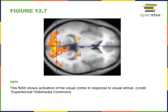An fMRI — functional magnetic resonance image — measures activity in the brain by detecting changes in blood flow, which is associated with increased information processing in a region. Here we see increased activity in the regions of the brain processing visual information: as a subject is shown a visual stimulus, the visual pathway increases its activity and more blood flows to that area of the brain processing the visual information.